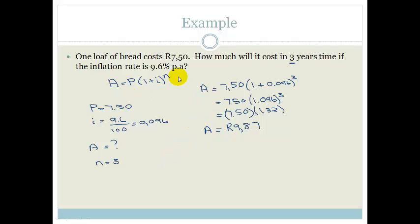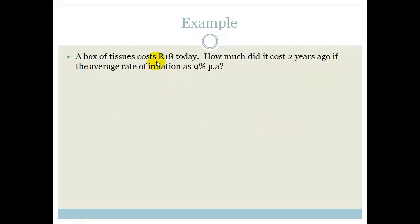Let's do another example now. It says a box of tissues costs R18 today. So that is the amount of money I'm paying today. Then it says how much did it cost two years ago if the average rate of inflation was 9% per annum.